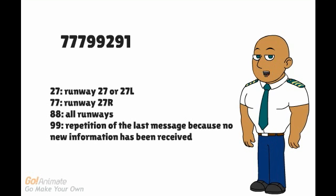The first two numbers indicate the runway. For parallel runways, 50 is added to the runway designator. 88 means all runways. The example is runway 27 right.